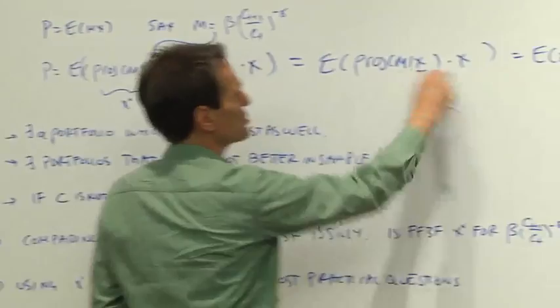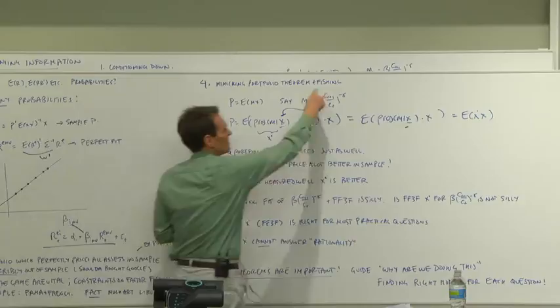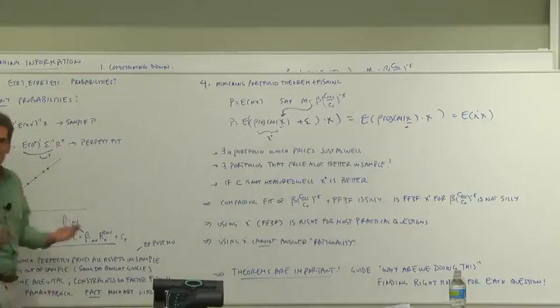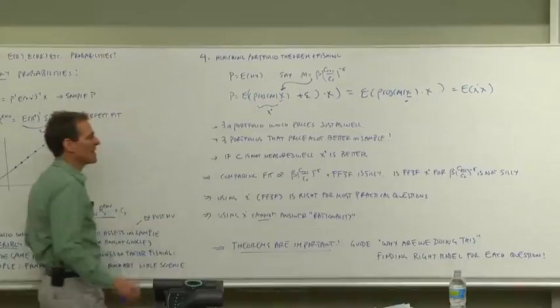You run a regression of M onto the space of payoffs with a residual. Residuals are uncorrelated with right-hand variables by construction. So that's the same thing as projection of M onto X times X, which is just our friend X star. So if this model worked, we could construct an X star just by running a regression of marginal utility onto the space of all returns, and that X star would generate prices exactly as well as the original consumption growth model, the mimicking portfolio theorem.